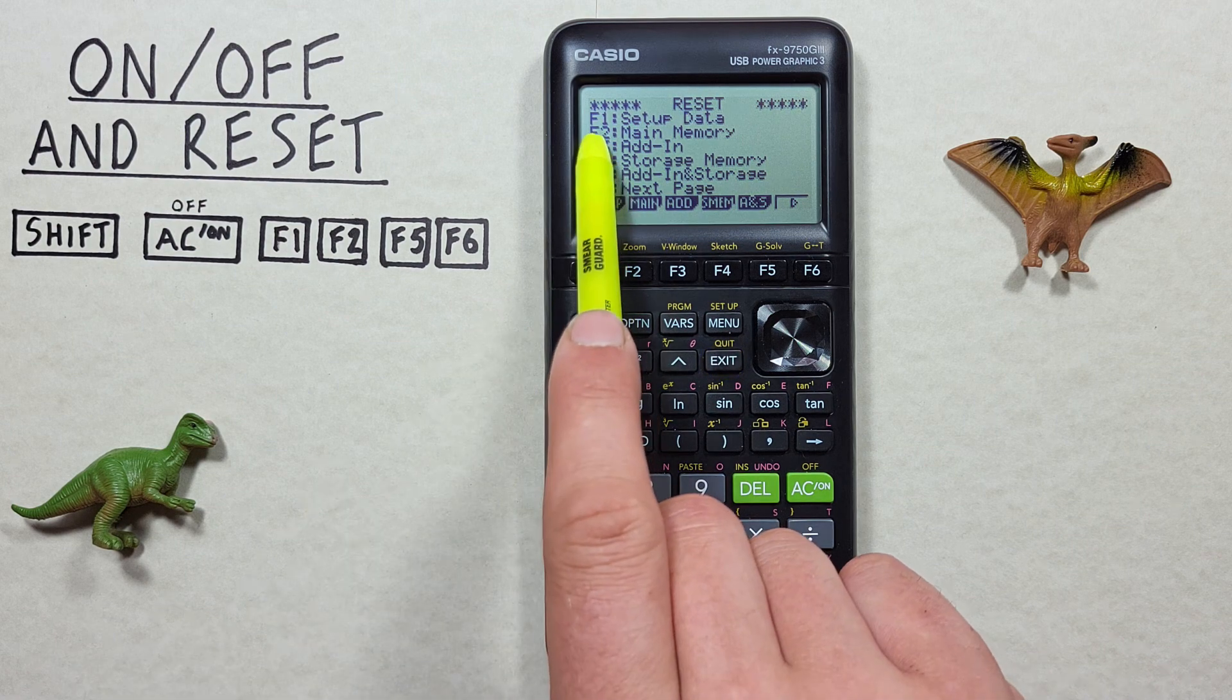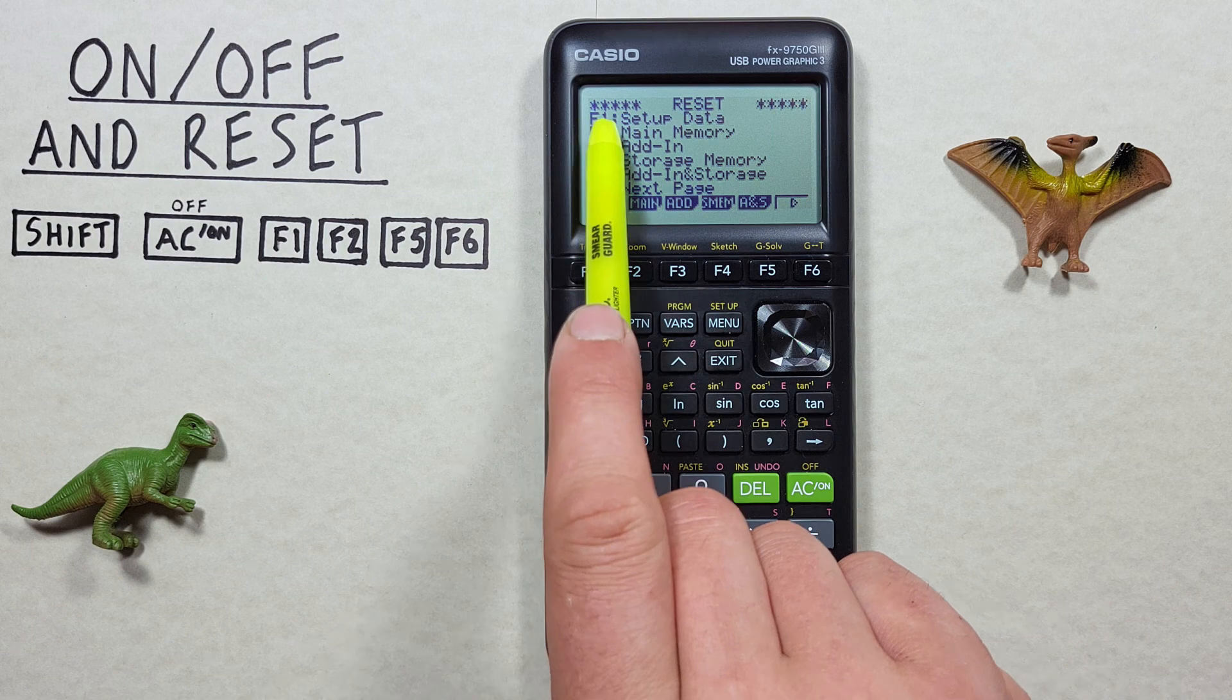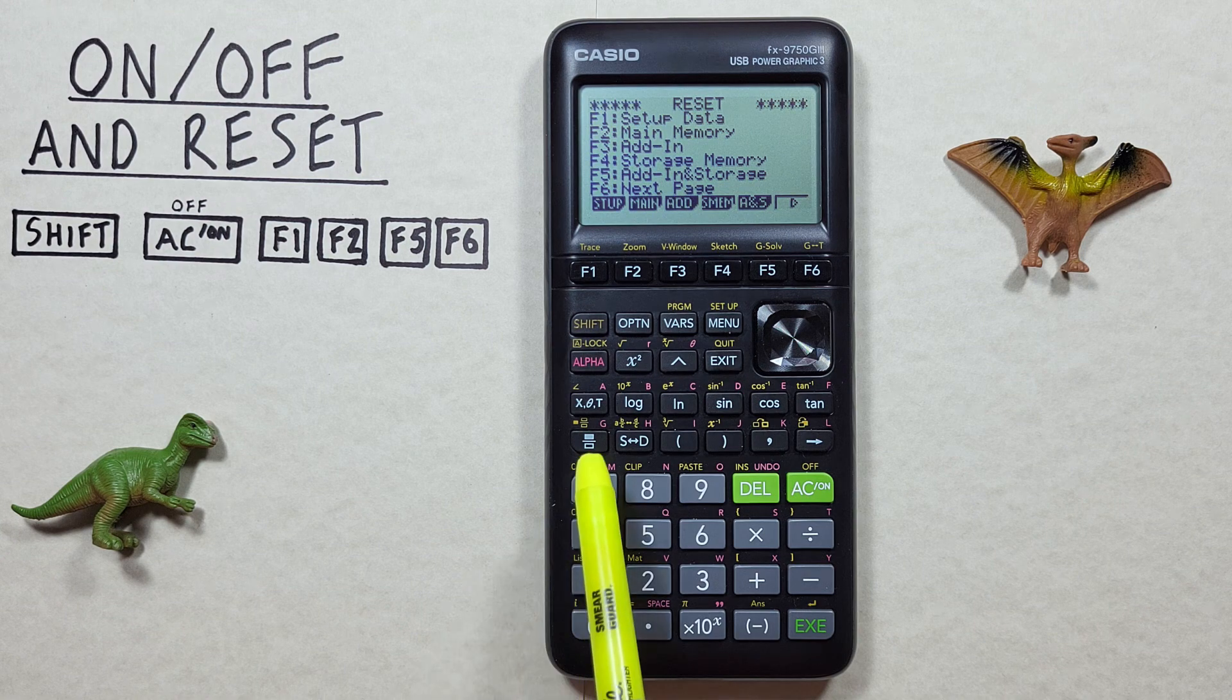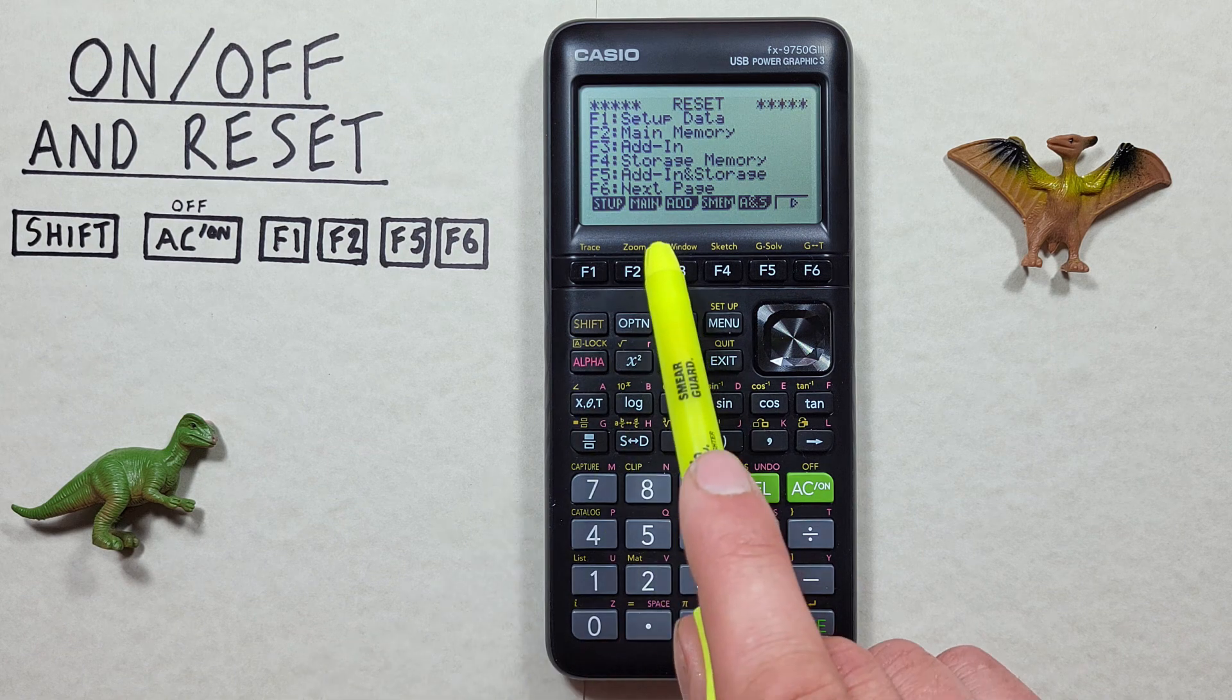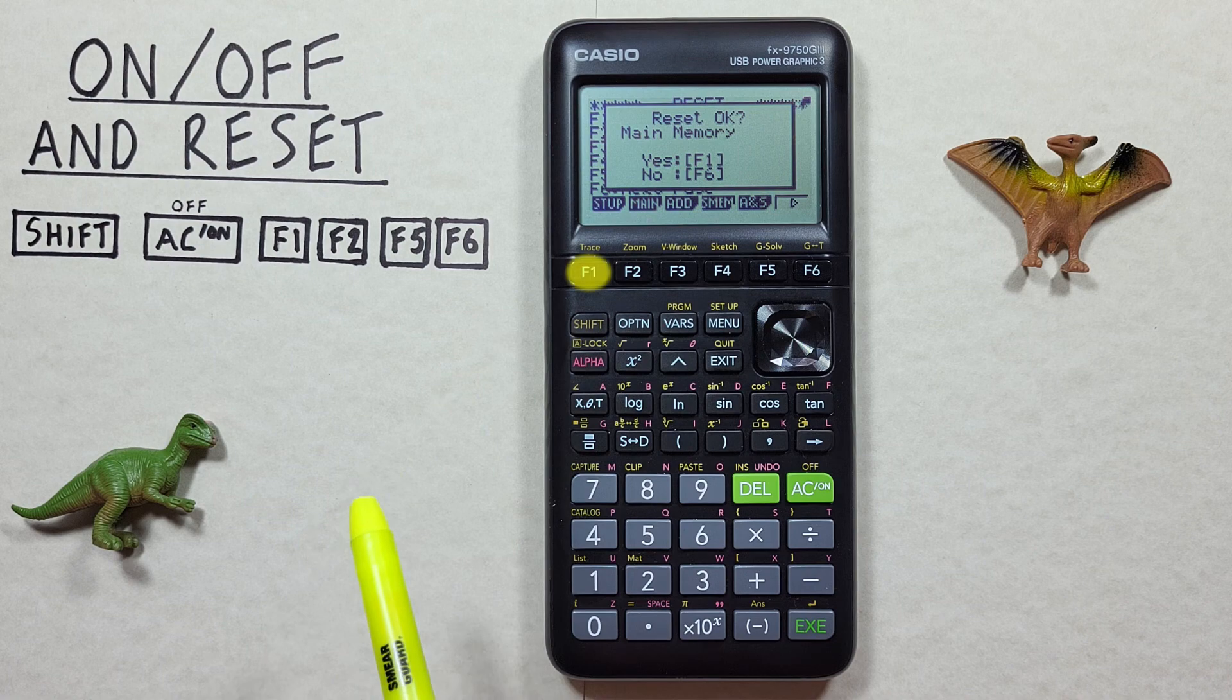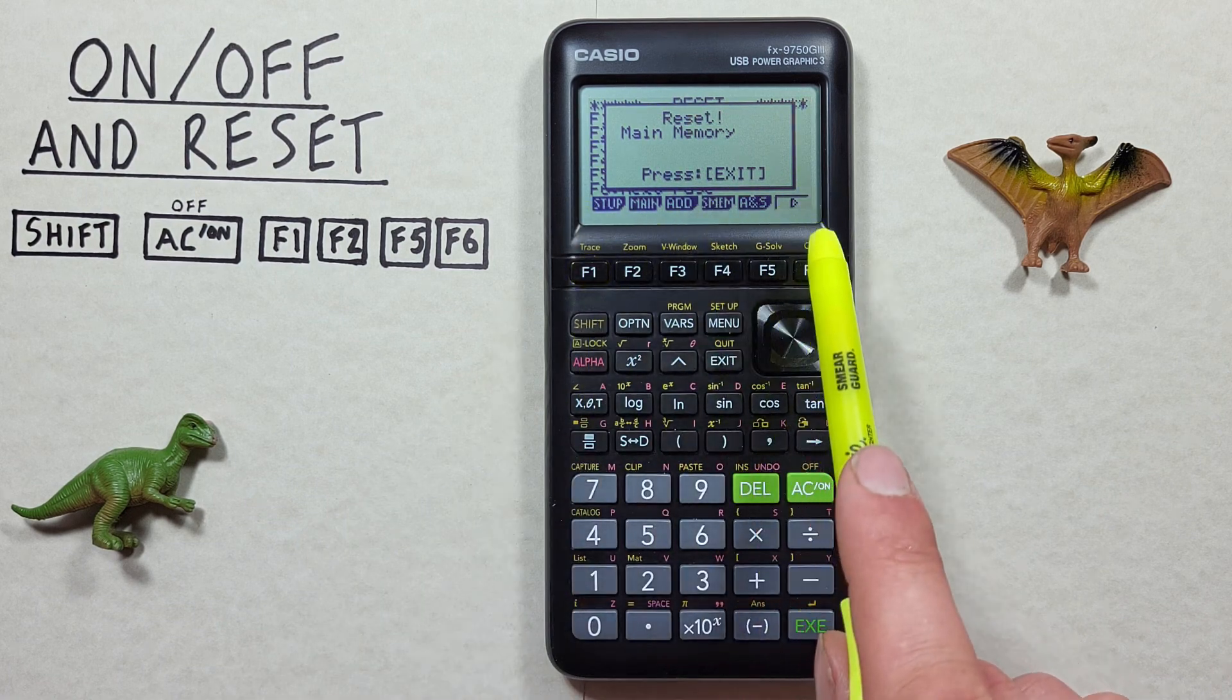Our next option is the F2 main memory reset. This will reset the settings like F1 does, but it'll also reset our save data, so saved values stored in the alpha keys, that sort of thing. To use this again we just press F2 and then F1, and our main memory has been reset.